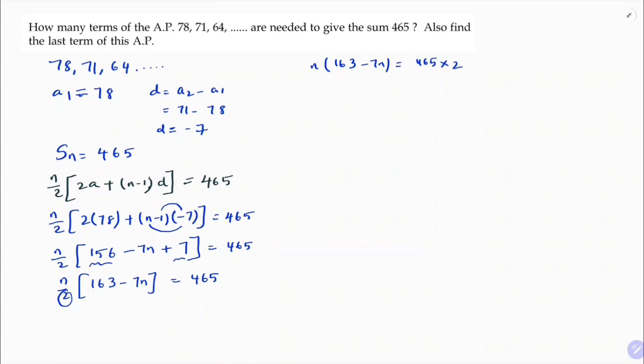So here n into 163 is 163n, n into 7n, 7n square equals 465 into 2, 930. Now write this equation in standard form. First write n square. So it is negative. So I will transpose these two values towards right side. So you will get 7n square minus 163n plus 930 equals 0.